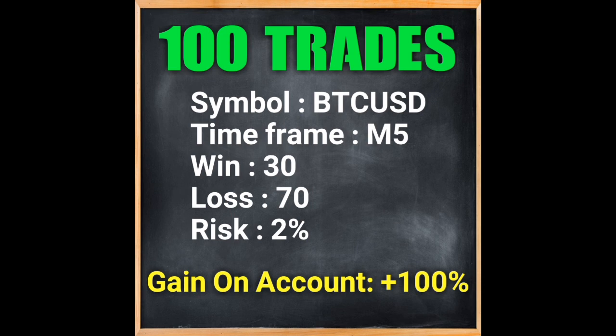The result of 100 consecutive trades in the BDKUST symbol on a five-minute timeframe is 30 wins and 70 losses. If we take the trading risk at two percent, and according to the strategy where take profit is bigger than stop loss, the gain on the account is equal to 100% profit, which is a great statistic.